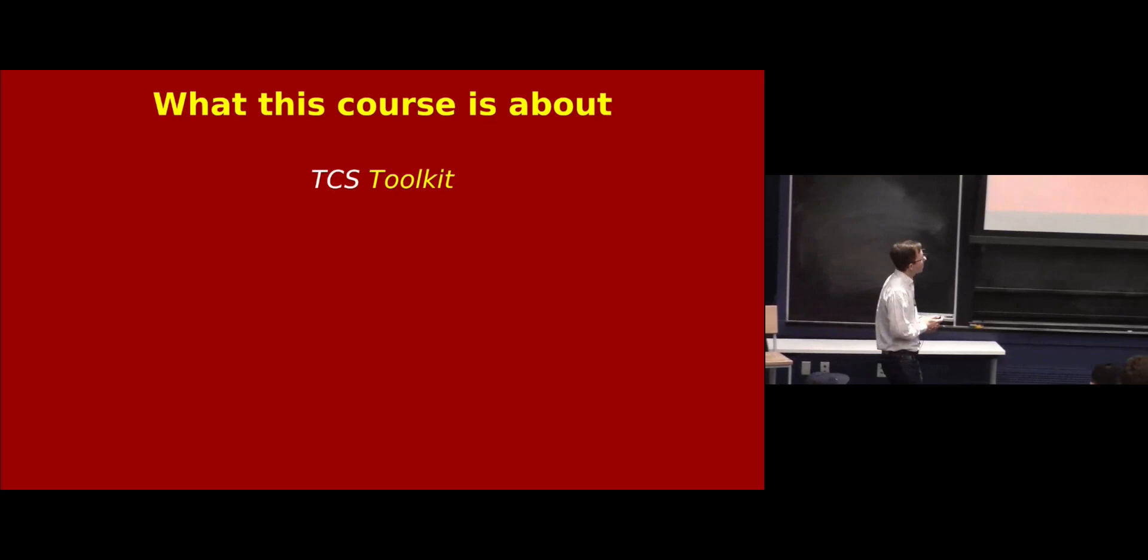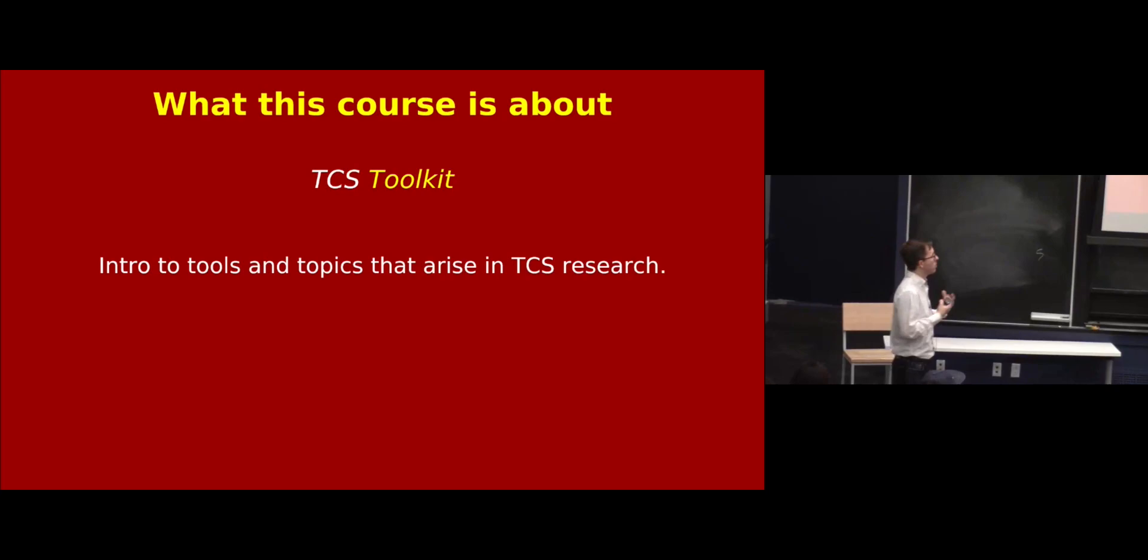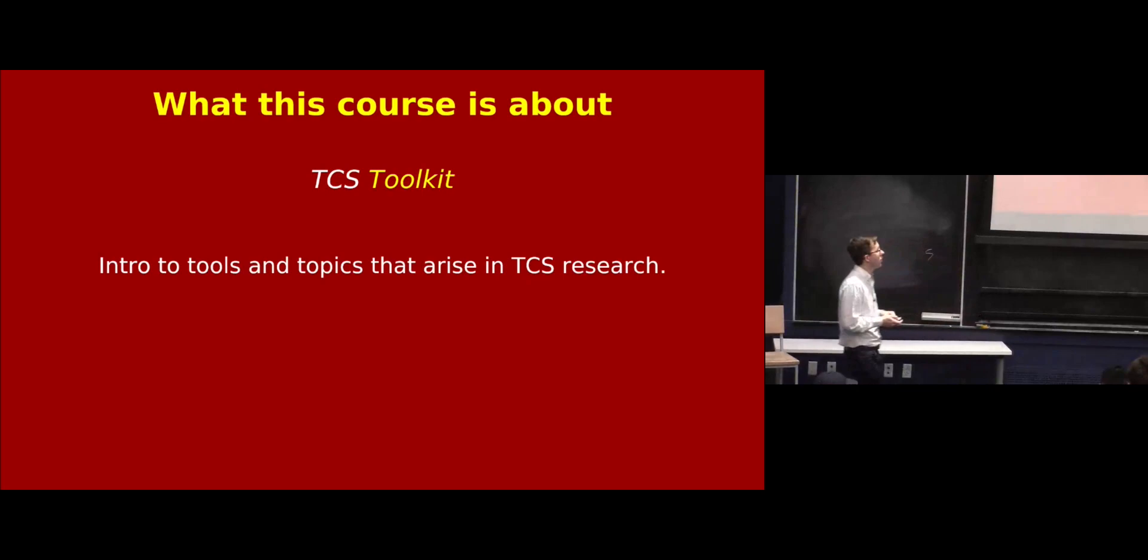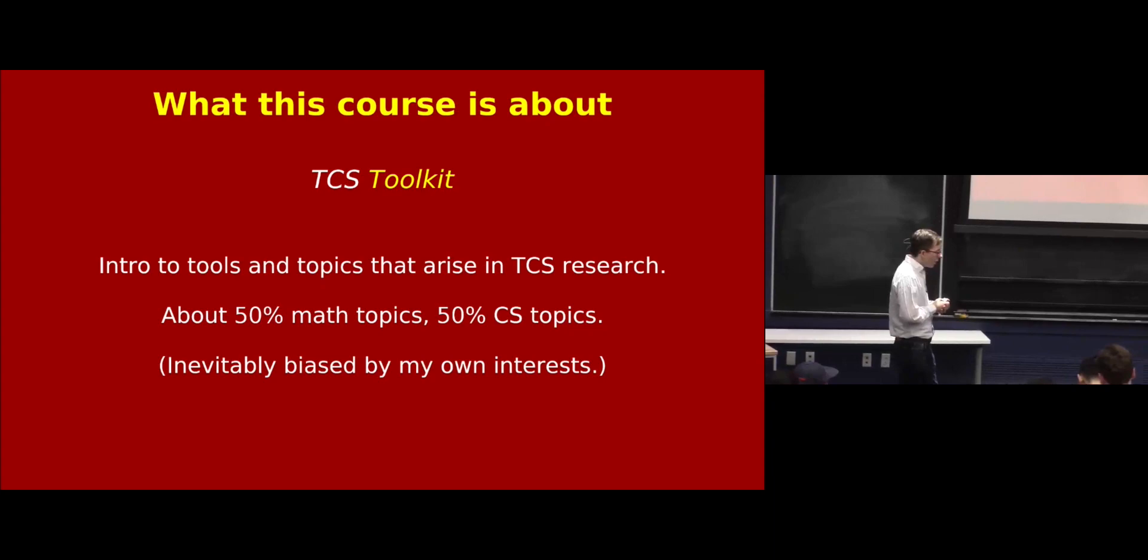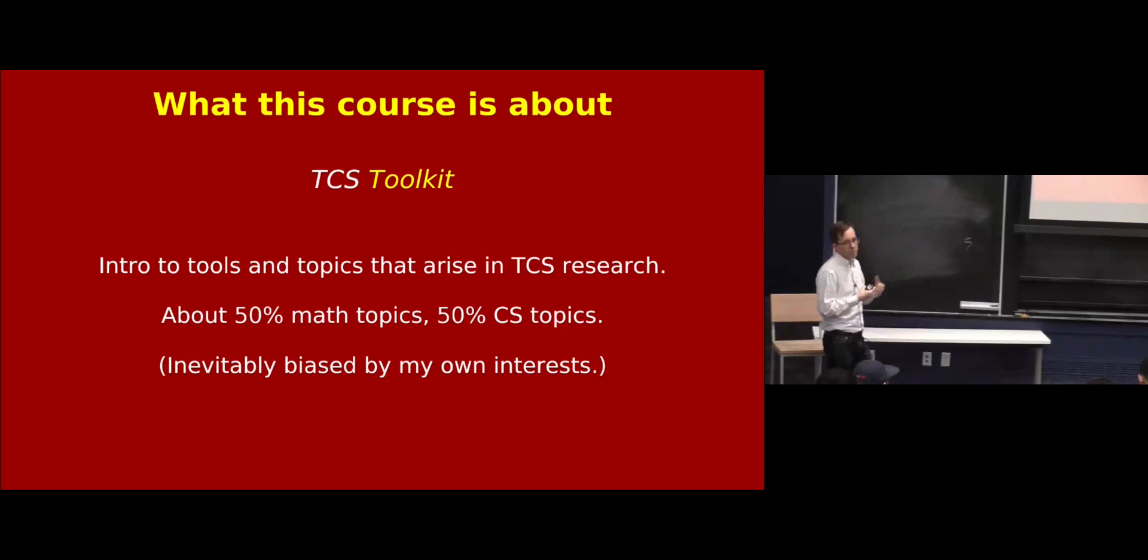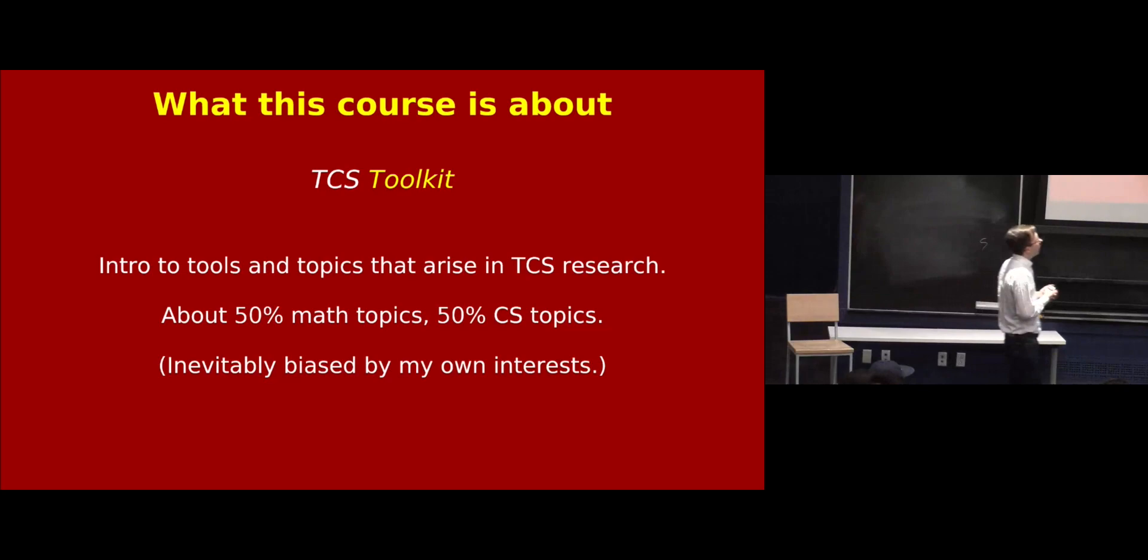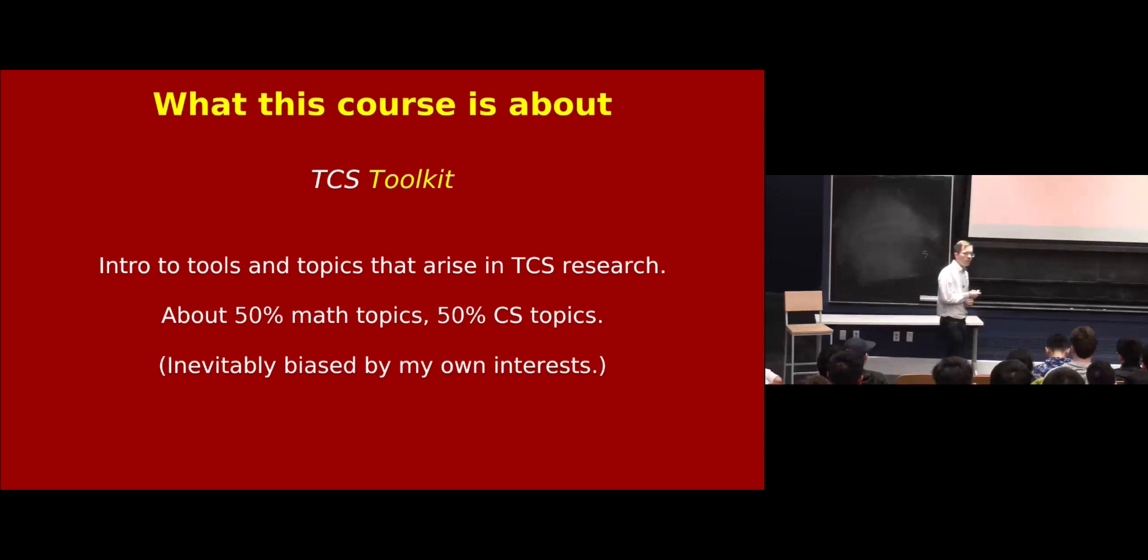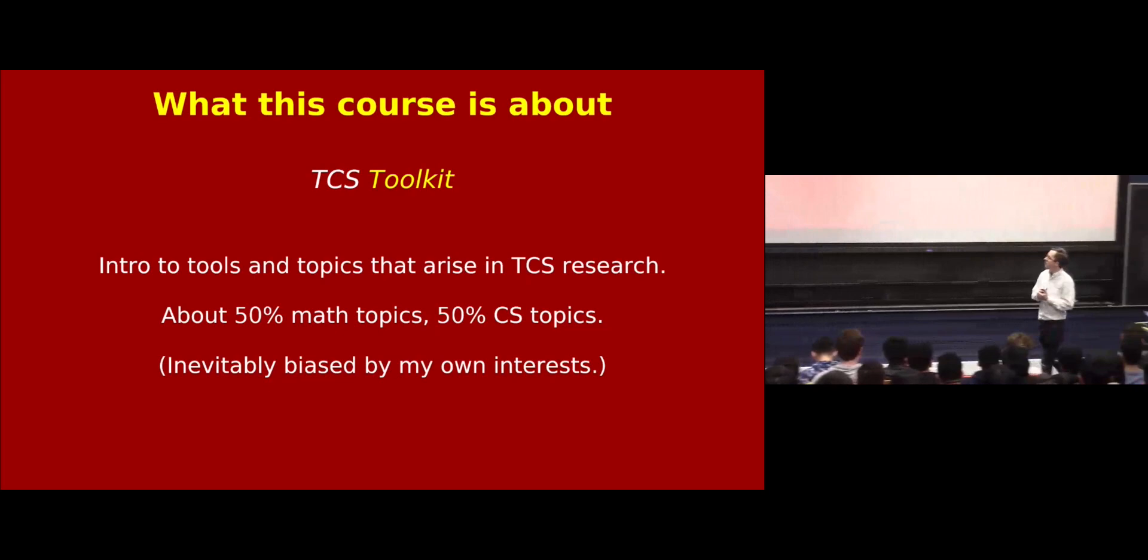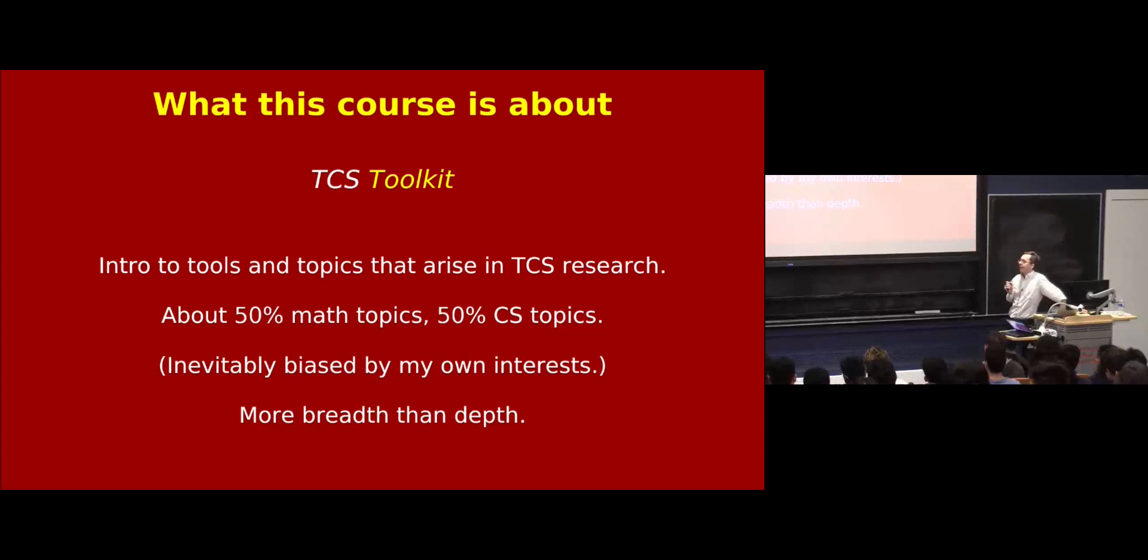Great. So that's TCS and toolkit. Well, that's a little bit self-explanatory. So this toolkit refers to the fact that I want to give you an intro to some of the tools and topics, especially mathematical tools and topics that arise in TCS research. So in fact, this course is going to be maybe like 50% math topics and 50% computer science topics. And if you had 28 additional lectures, as I do, to talk about math and computer science topics relevant for TCS research, you could choose some subset of 100 possible topics to talk about. And so the ones that I'm choosing are inevitably biased by my own interests. So we're probably going to get more probability and complexity theory than you would get from some other lecturer. But that's how it's going to be. And another thing I want to emphasize about this course is, this is a bit of a warning, it's more breadth than depth.